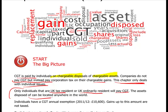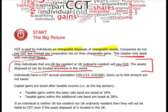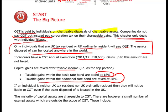Only individuals who are UK resident or UK ordinarily resident will pay capital gains tax. The asset disposed of can however be located anywhere in the world — it's not just about UK assets. Individuals have an annual CGT exemption of £10,600; gains up to this amount are tax free. Capital gains are taxed after taxable income: if someone is in the lower rate band, taxable gains are taxed at 18%; if they've gone into the 40% band, taxable gains are taxed at 28%. If an individual is neither UK tax resident nor UK ordinarily resident, they will not be liable to capital gains tax even if the asset is located in the UK.